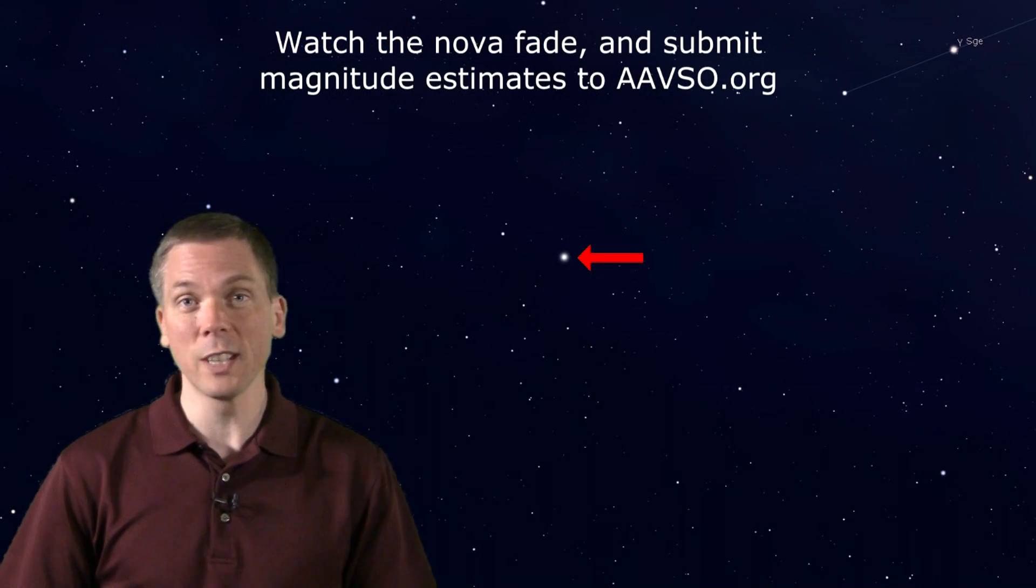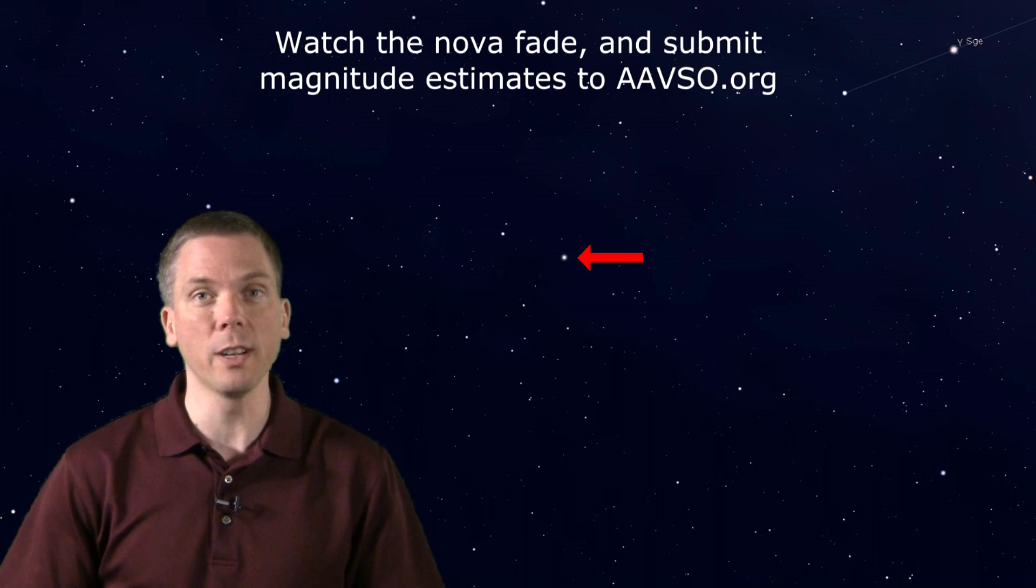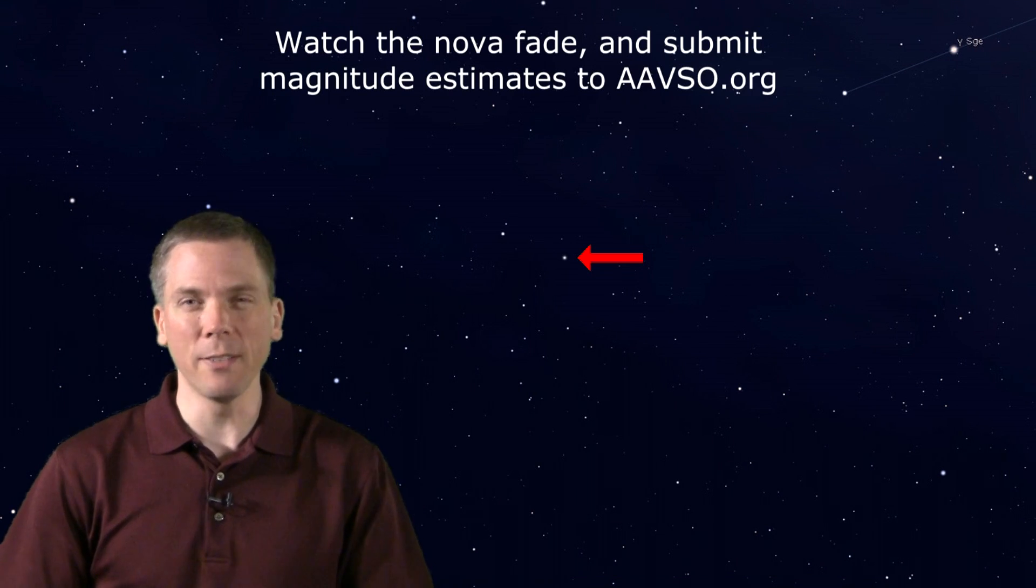Binoculars will get you to magnitudes 6, 7, or 8, depending on your local light pollution, but you will want to use a telescope if it's much dimmer than that.